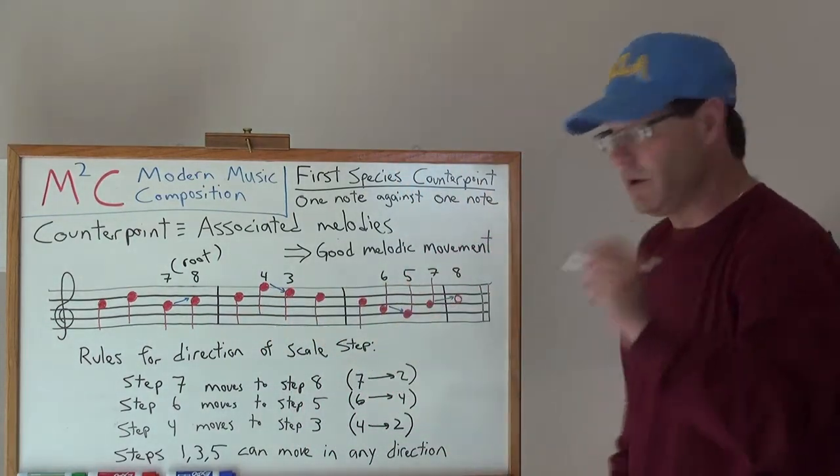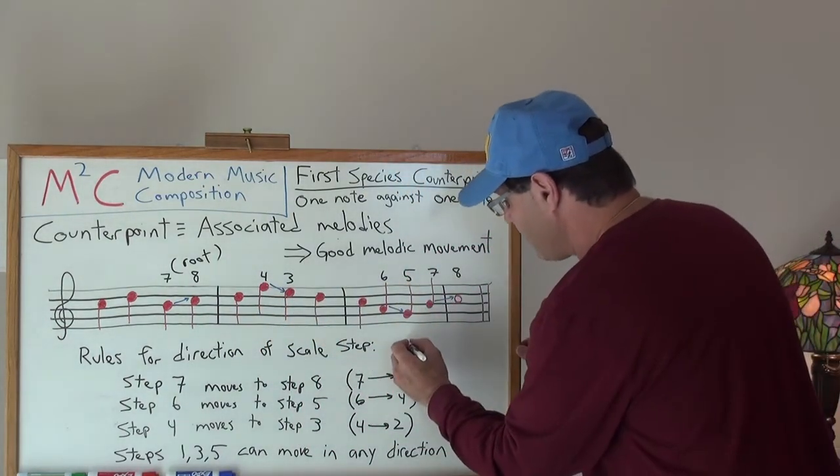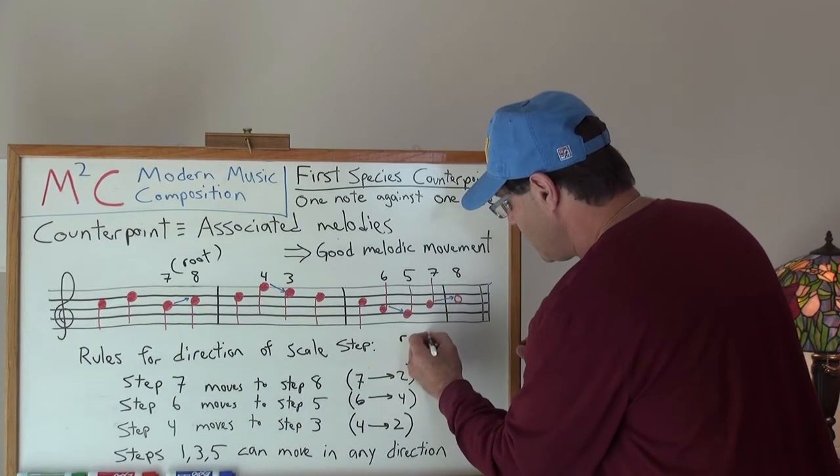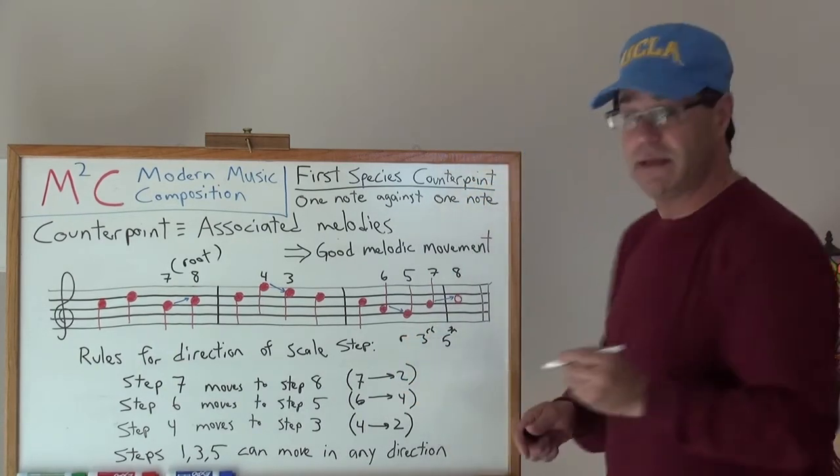The third and the fifth, well, what did we learn from before? If we have a root, a third, and a fifth, what is that? That's a major triad.